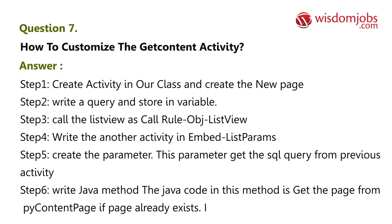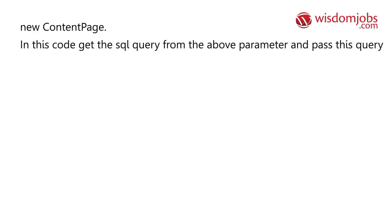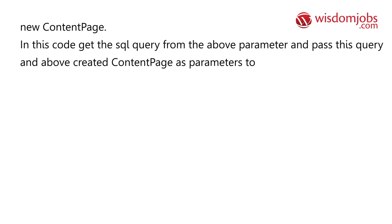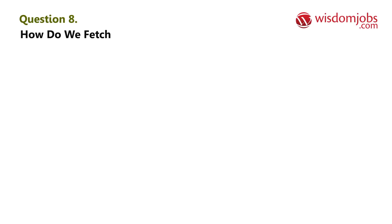Step 5 — Create a parameter; this parameter gets the SQL query from the previous activity. Step 6 — Write a Java method. The Java code in this method gets the page from the pxContent page: if the page already exists it is used; if not, it creates a new content page. Then get the SQL query from the above parameter and pass this query and the created content page as parameters to the tools.getDatabaseExecutorDBQueryPageName method.